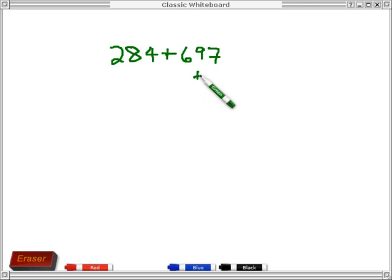Like in this problem, the simplest thing would be to just add 3 to the second one and subtract 3 from the first one. And so we get 281 plus 700 and that would give me 981 and we'd be all set.